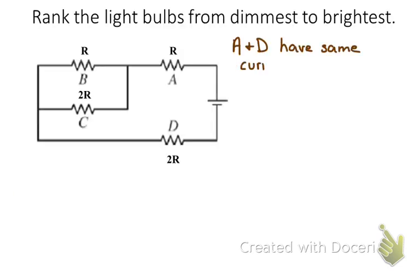So here's a very typical example. You're given a circuit, and you're given some resistances, and you're asked to rank them from least power dissipated to brightest, or if they're light bulbs, you might say from dimmest to brightest. And so here's kind of the approach you might take.